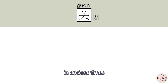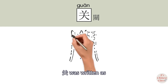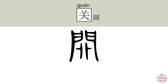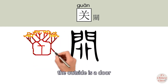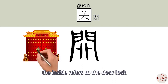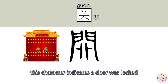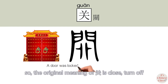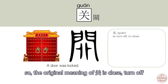In ancient times, 关 was written with the outside being a door and the inside referring to the door lock. This character indicates a door was locked. So the original meaning of 关 is 'close, turn off.'